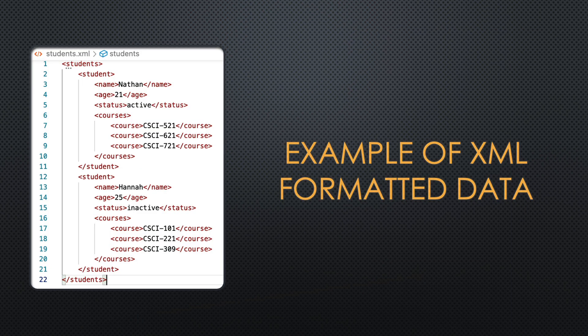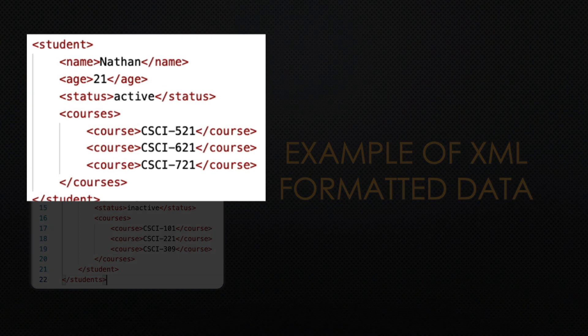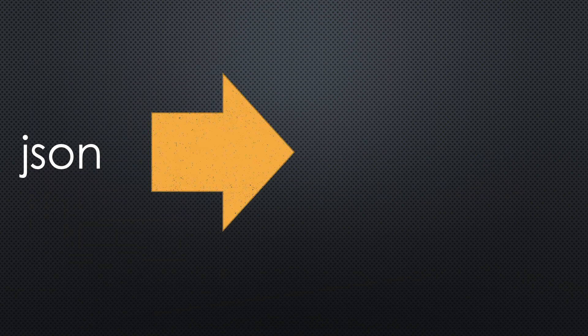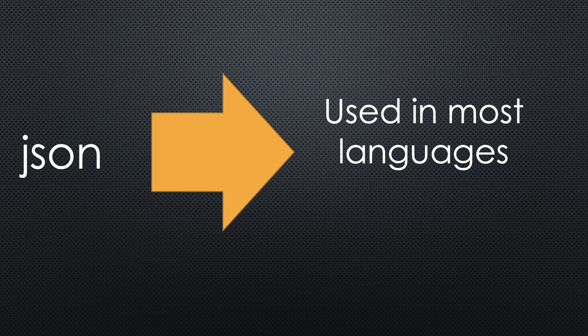Prior to JSON, a popular data format was XML, which accomplishes the same thing. You can see the list here showing that the same list of students has a bunch of brackets that looks like HTML code from a web page. XML stands for Extensible Markup Language, and it has fallen out of favor in some places because it is a little bit more clumsy to work with.